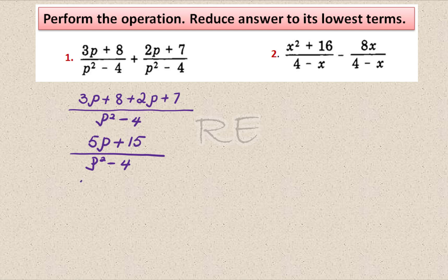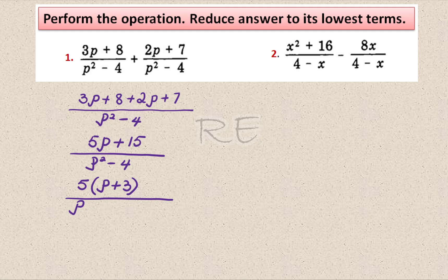Now we factor. When we factor 5 from the numerator we get 5 times p plus 3. When we factor the denominator, we get p plus 2 times p minus 2.